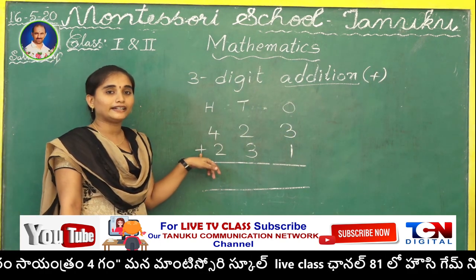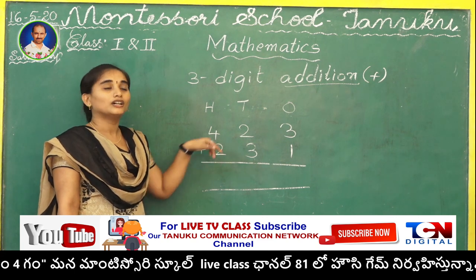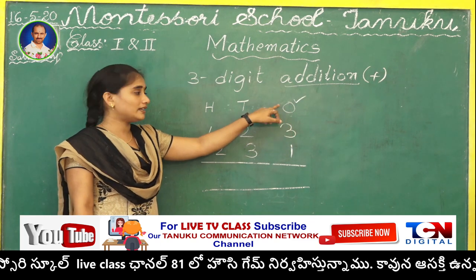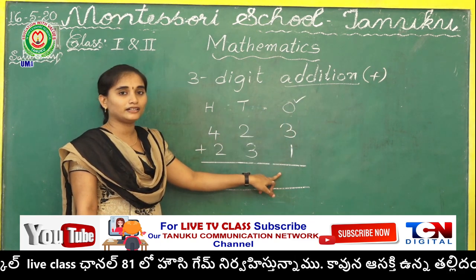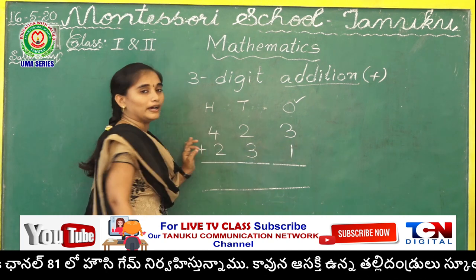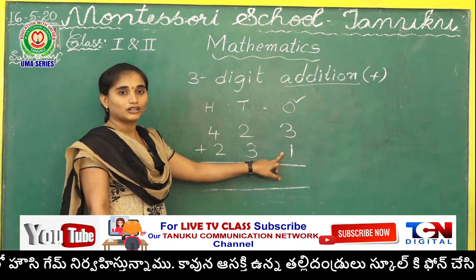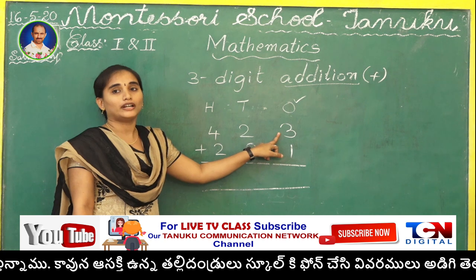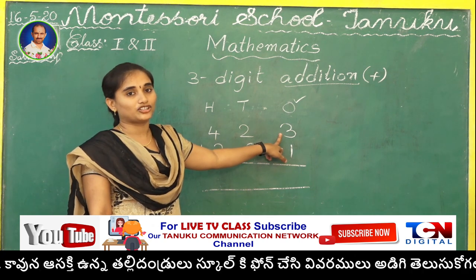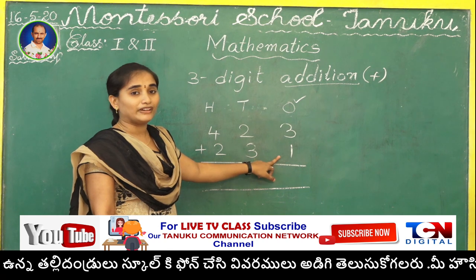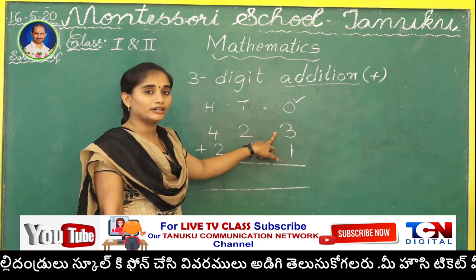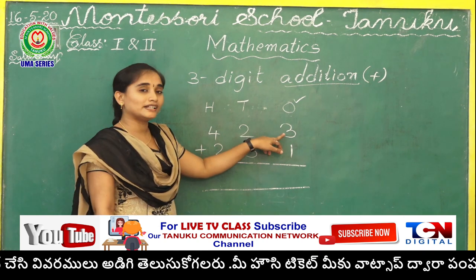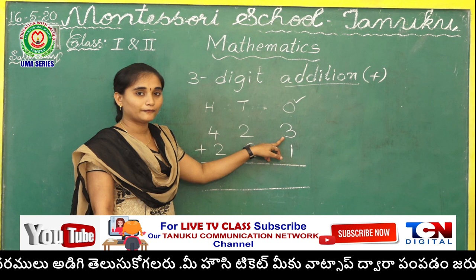From which place do you have to start addition? Already we told yesterday — from the ones place only. What are the numbers under ones place, children? 3 and 1. 3 plus 1. We have to add 1 to 3. We learned yesterday the properties of addition. When we add 1 to any number, we get the next number. So what is the next number to 3?